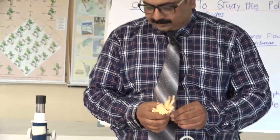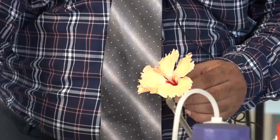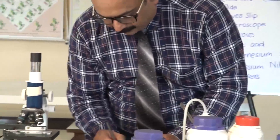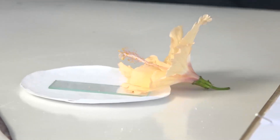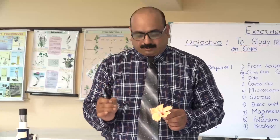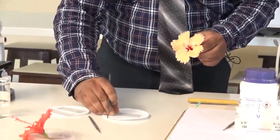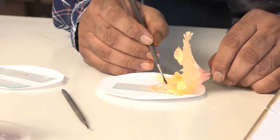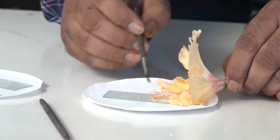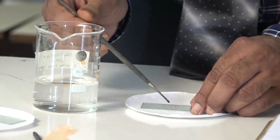This is a china rose flower. Pollen grains are microscopic in nature — you cannot see them with the naked eye. We can use a fine brush to take the pollen out. I have kept a clean slide here and am gently brushing off the pollen onto it. Keep on brushing so that the pollen is not flooded away with the solution.